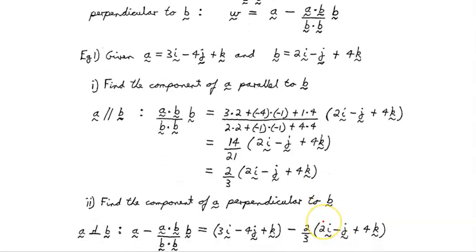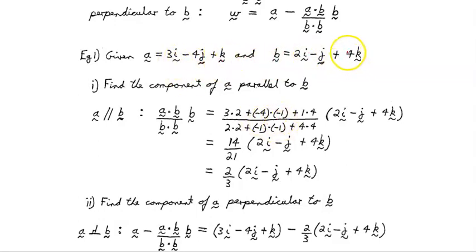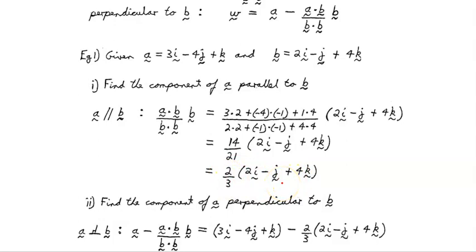Let's look at an example. Given vector A equals 3i minus 4j plus k, and B equals 2i minus j plus 4k, find the component of A parallel to B — the projection of A in the direction of B: (A dot B / B dot B) times B. Computing A dot B: 3×2 + (−4)×(−1) + 1×4 equals 14. Computing B dot B: 2×2 + (−1)×(−1) + 4×4 equals 21. So we get 14/21, which simplifies to 2/3 times vector B. That's vector U, the projection of A in the direction of B.